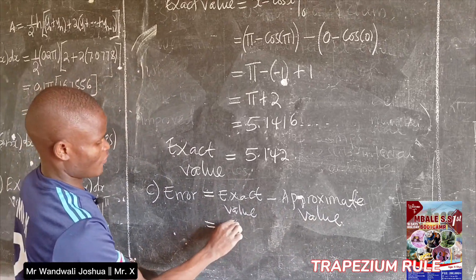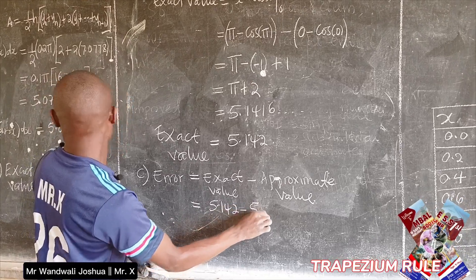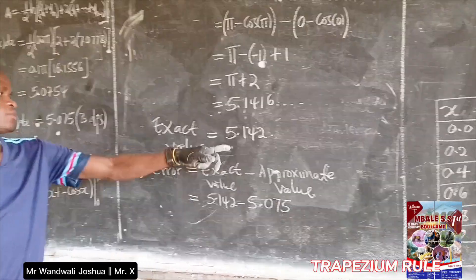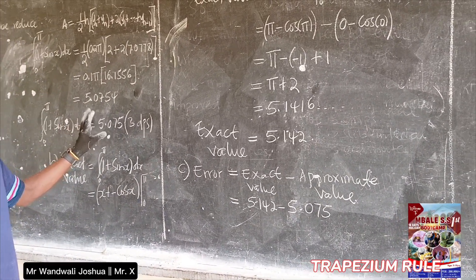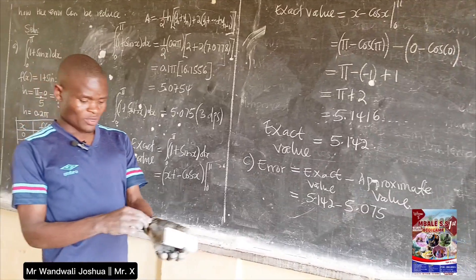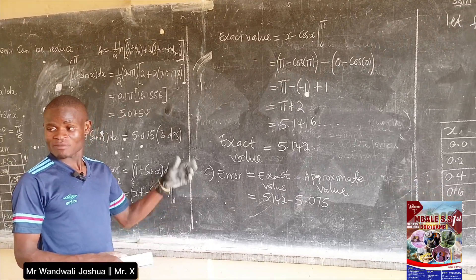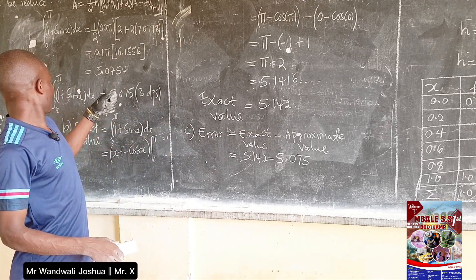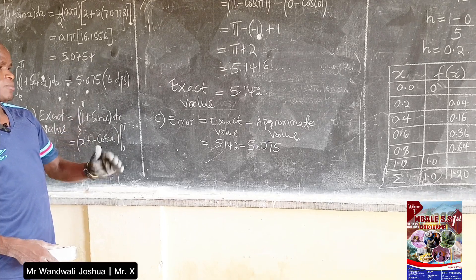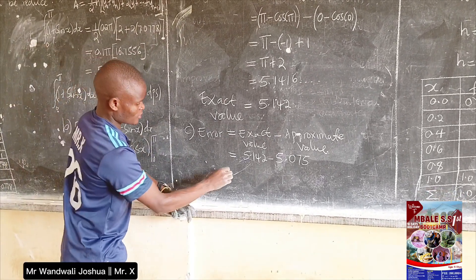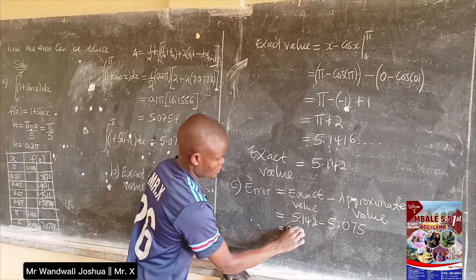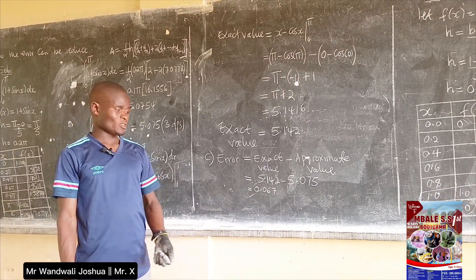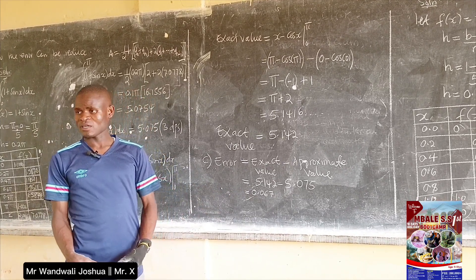For part C, the error = exact value − approximate value = 5.142 − 5.075 = 0.067. The trapezium rule is an approximation method — it approximates the curve as straight lines — so there will always be an error between the trapezium result and the true value.